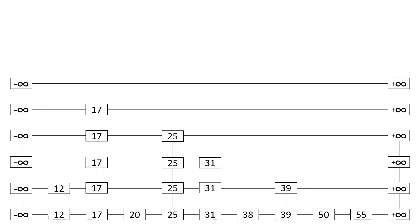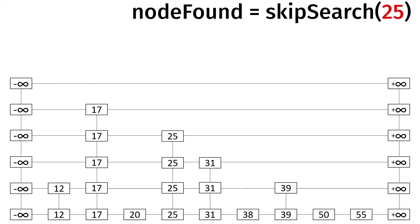Now we want to delete a node from the skip list. Let's say we want to delete 25. The first thing we have to do, just like last time, is make sure this node exists — so we find the node with key less than or equal to 25. If it doesn't exist, we just return null. It does exist, so that's why I picked one that does.